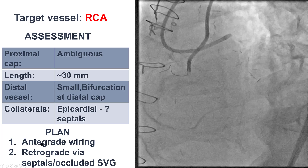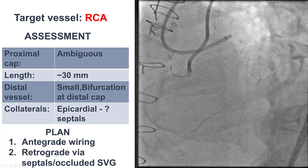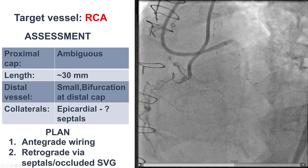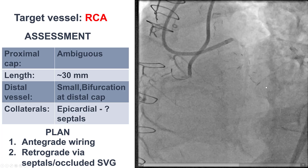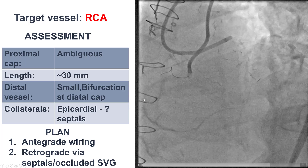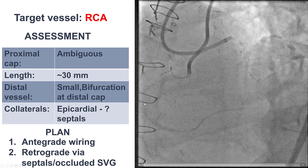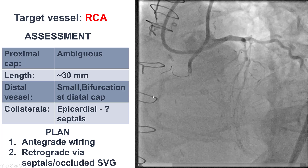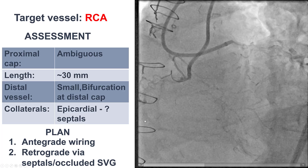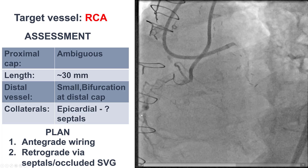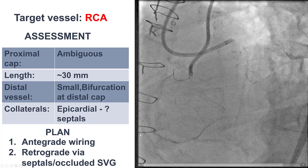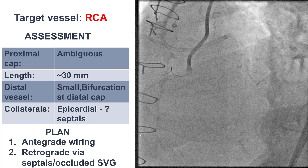The plan was to start with antegrade wiring if we could decipher the course of the vessel, and if that was not successful, to try retrograde crossing. We did not want to use antegrade dissection re-entry because there was this large marginal branch through which there was collateral flow to the RCA, and occluding the branch might adversely impact the stability of the patient.